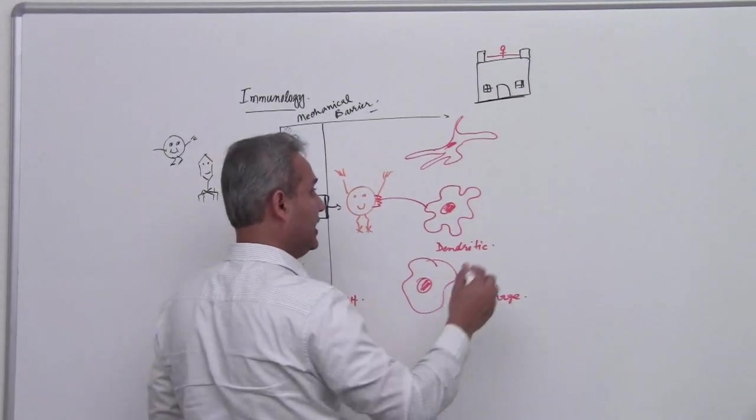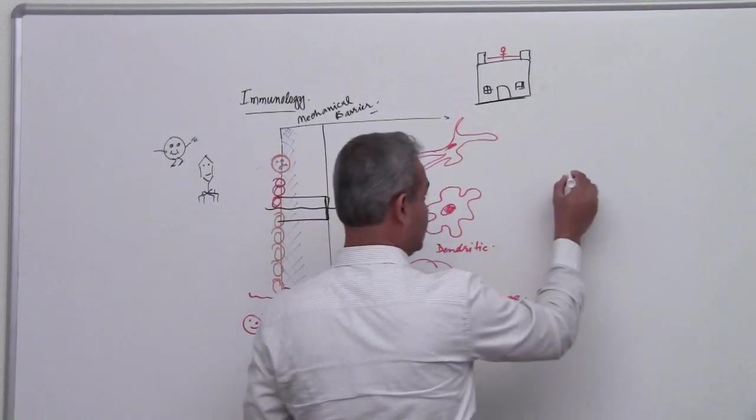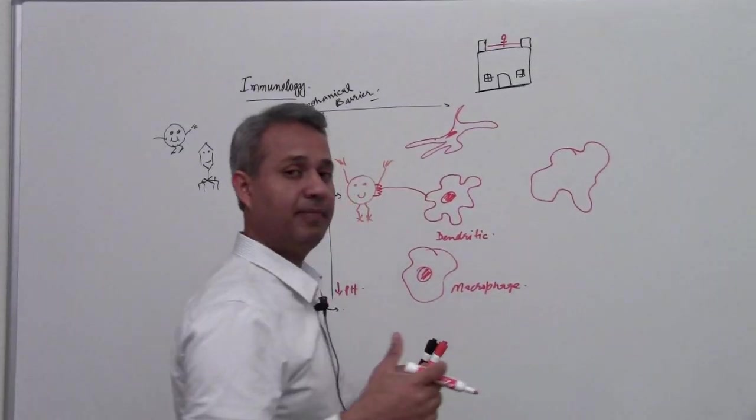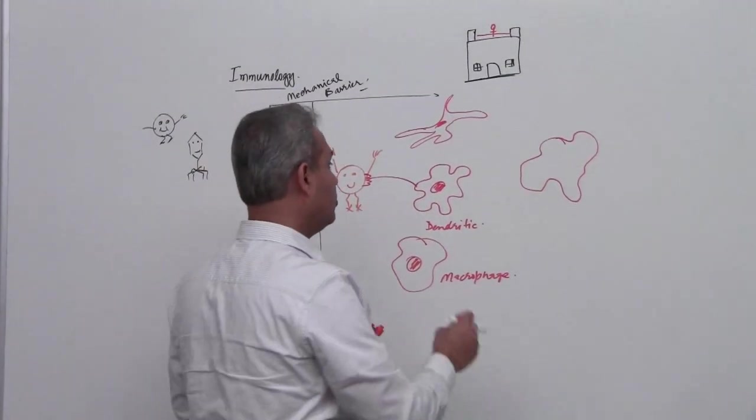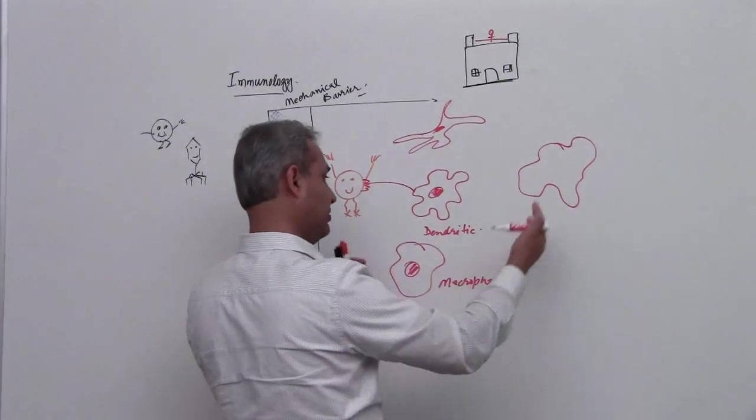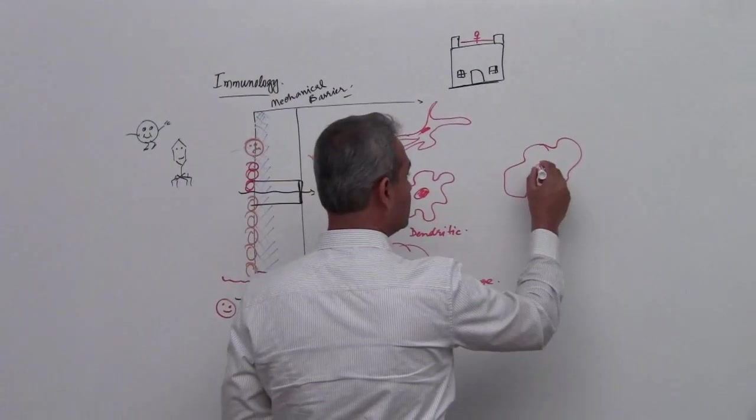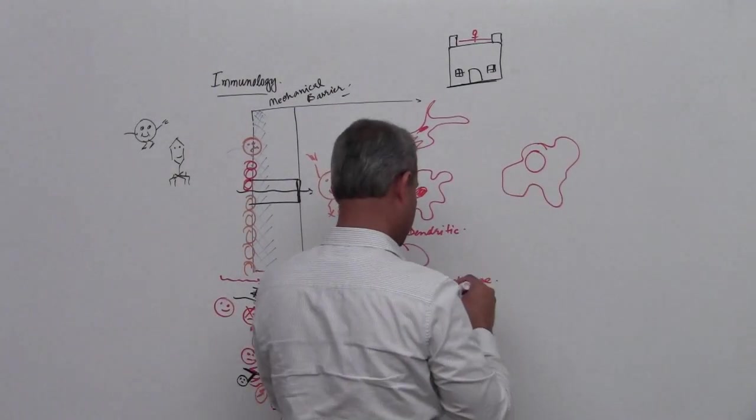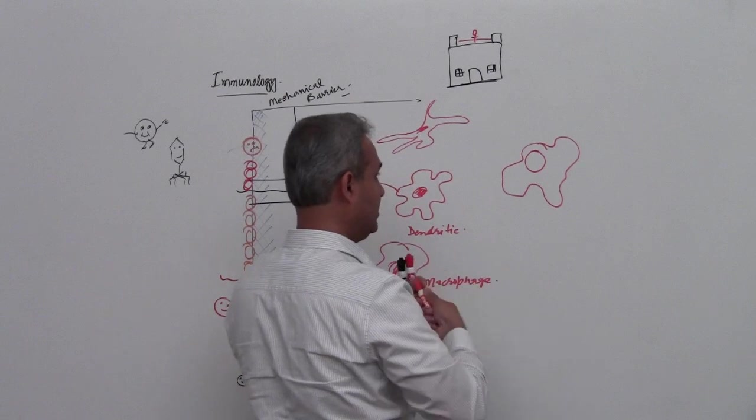So when they eat it up, what happens is, here is a dendritic cell or a macrophage, whoever eats that. Most of the time it is dendritic, but macrophages are present as well. So the pathogen has been eaten.